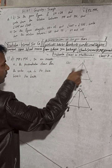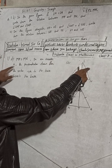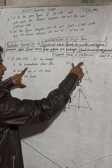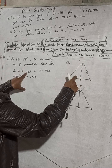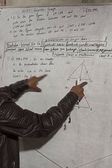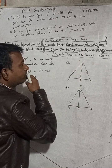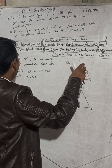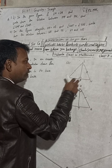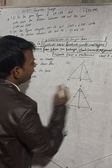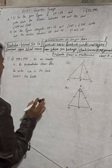Because this is an isosceles triangle — two sides are equal — so in this isosceles triangle, the perpendicular from the vertex angle to the base bisects the base. That is why MP is equal to PN.